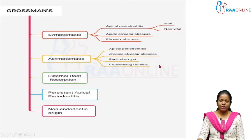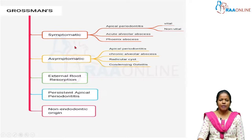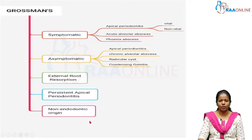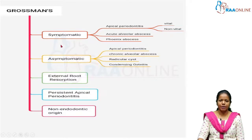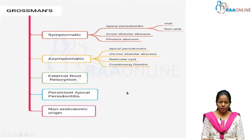Grossman has classified periradicular disease into symptomatic apical periodontitis, asymptomatic, external root resorption, persistent apical periodontitis, and periapical disease of non-endodontic origin. Under symptomatic you have apical periodontitis, acute alveolar abscess, and phoenix abscess. Under asymptomatic you have apical periodontitis, chronic apical periodontitis, radicular cyst, and condensing osteitis.